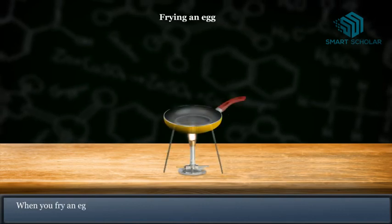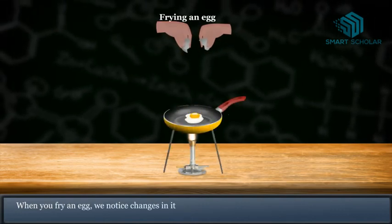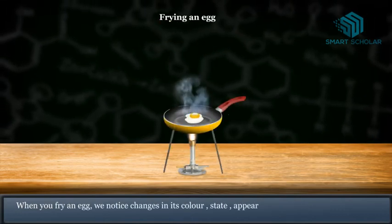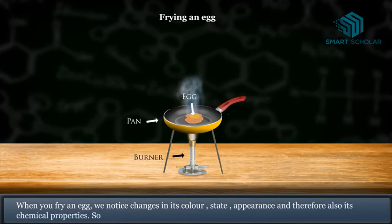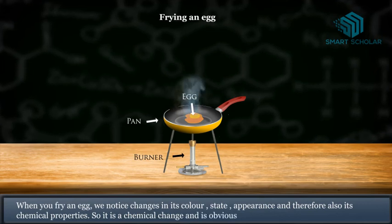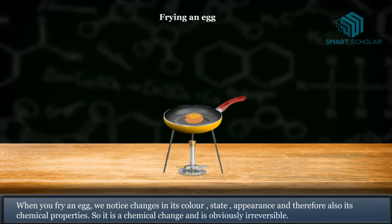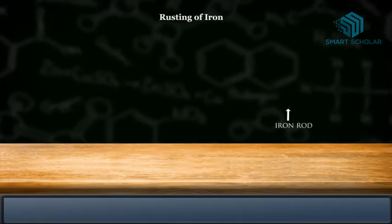Frying an egg. When you fry an egg, we notice changes in its color, state, appearance, and therefore also its chemical properties. So it's a chemical change and is obviously irreversible.